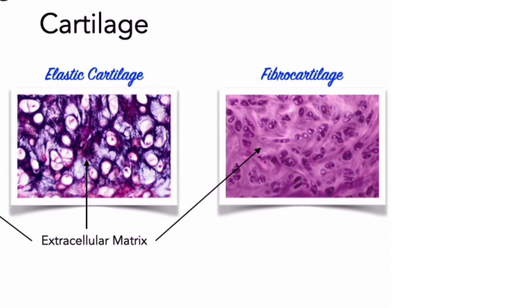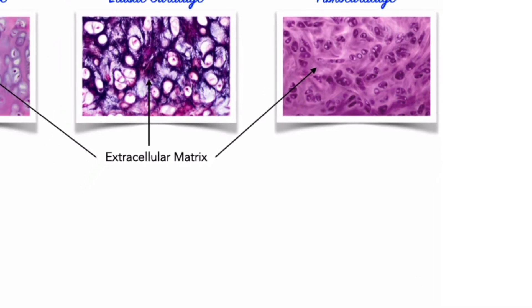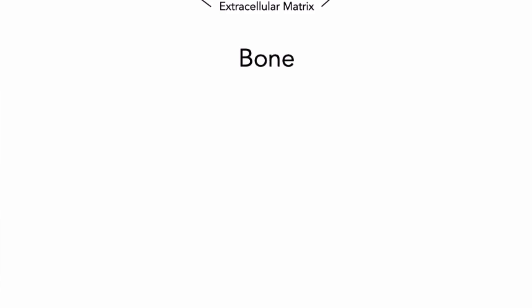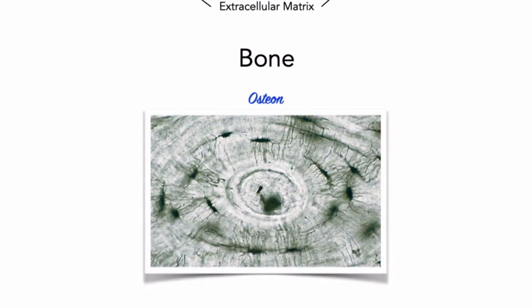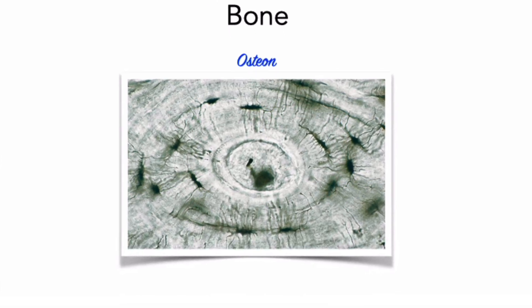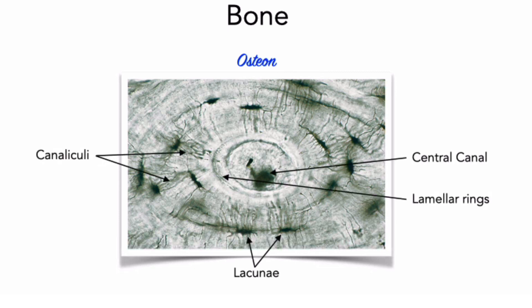Cartilages heal poorly, and damaged fibrocartilage in joints, such as a knee, can interfere with normal movements. Turning to bone: the volume of ground substance in bone is very small. The matrix of bone consists mainly of hard calcium compounds and flexible collagen fibers, giving bone remarkable properties — both strong and resilient to shattering. Like cartilage, the cells of bone, called osteocytes, rest in small pockets called lacunae. Diffusion of nutrients and gases cannot take place through the bony matrix, but osteocytes obtain nutrients through cytoplasmic extensions that reach blood vessels and other osteocytes, running through a branching network called canaliculi.